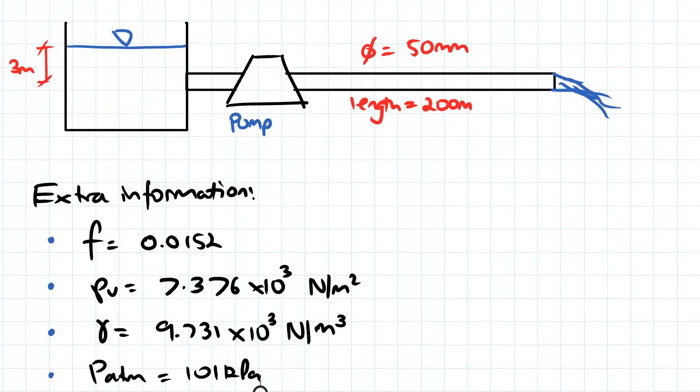So here's our diagram here. We've got our free surface here, which is 3 meters above our pump and our length of 200 meters of 50 millimeter diameter pipe that's then exiting out into the atmosphere.